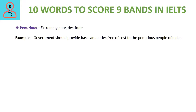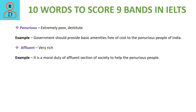The next word is affluent. This is the opposite of penurious and means someone who is very rich. The example says that rich people should help poor people.